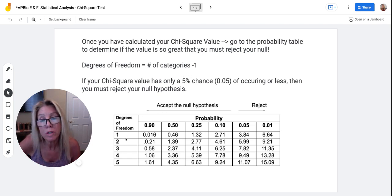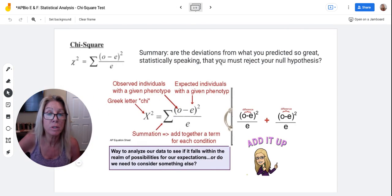And what you do is you look at your degrees of freedom and you try to find the chi-square value. The chi-square value is what you calculated right here.